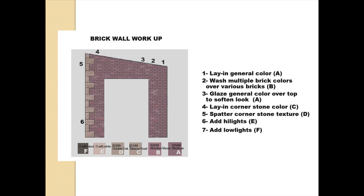Next I need to communicate to the scenic artists who will actually paint and finish the look of the set. This is called a painter's elevation — it's an actual workup talking about each of the layers of painting working up to the finished look. Step one is a general lay-in color. Number two is a wash laid over that, then a glaze, and number four is the lay-in of the cornerstone colors. Number five is a spatter added over the top. Number six is highlights and lowlights. A scenic artist will understand all those terms and know how to get the effect I want in the finished design.